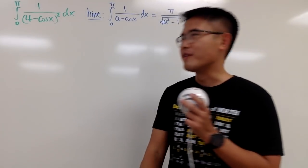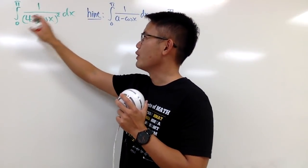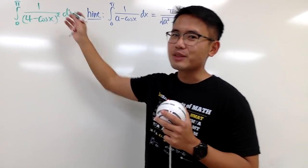Okay, let's do some crazy-looking integral. This is the integral from 0 to pi of 1 over (4 minus cos x) squared.